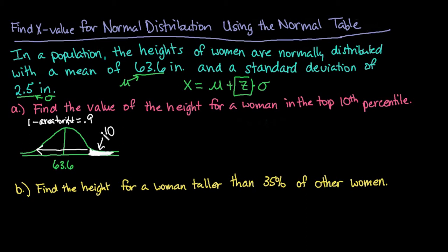We know that our z-score needs to be positive because of the fact that 10% of the area to the right is less than 50% of the area to the right. So we do know that we want a positive z-score that our value is going to be higher than the 63.6.